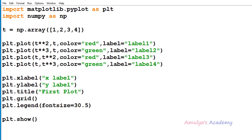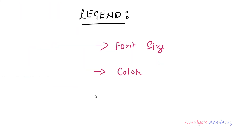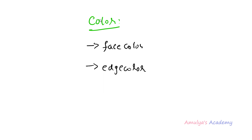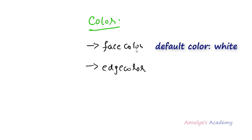So in this way we can change the font size of the legend using the fontsize keyword. Next let's see how to change the color of the legend. We can change the face color and edge color of the legend. Face color is the background color, and edge color is the edge of the legend — that is the frame color. If you take face color as none it will take the default value.